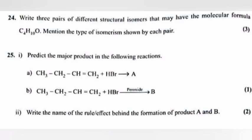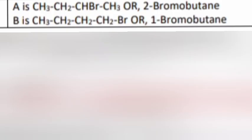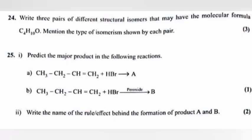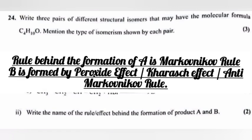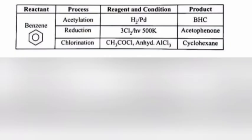Question 25: 1. Predict the major product in the following reactions. Answer: a is CH3 CH2 CHBr CH3 or 2-bromobutane. b is CH3 CH2 CH2 CH2 Br or 1-bromobutane. 2. Write the name of the rule or effect behind the formation of product A and B. Answer: Rule behind the formation of A is Markovnikov rule. B is formed by peroxide effect, Kharash effect, or anti-Markovnikov rule.